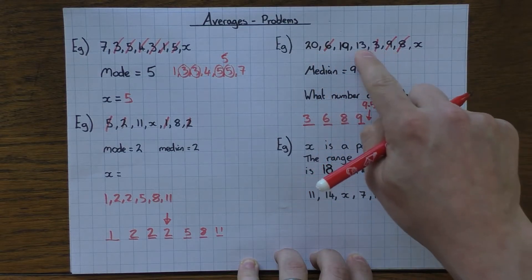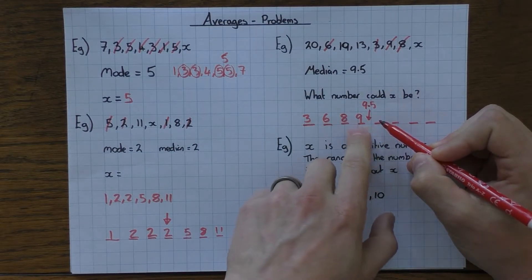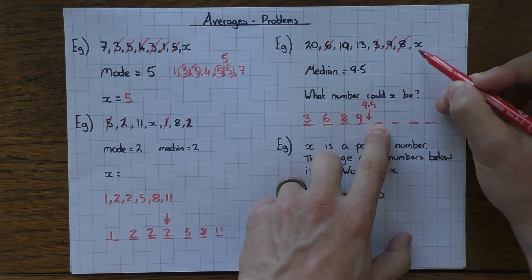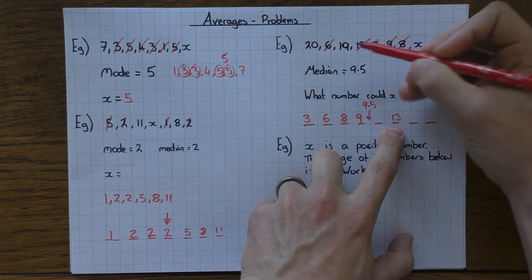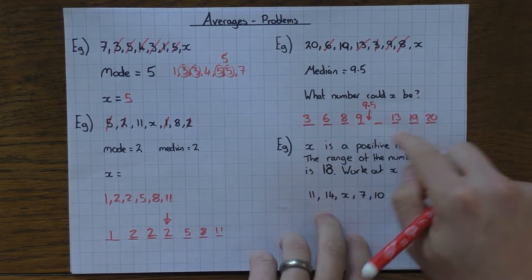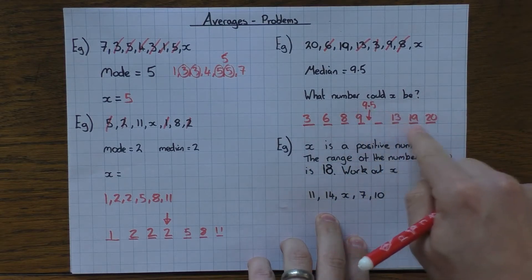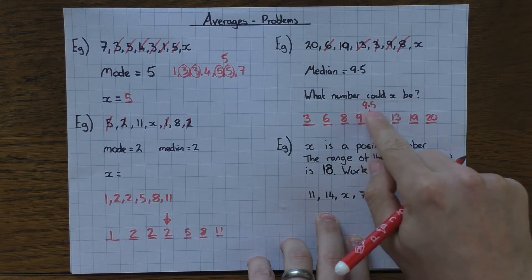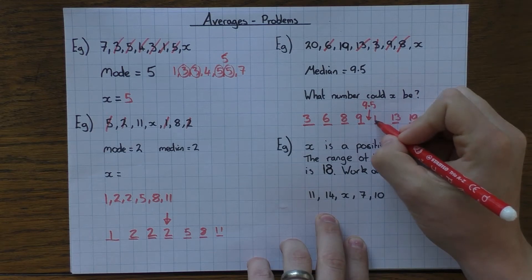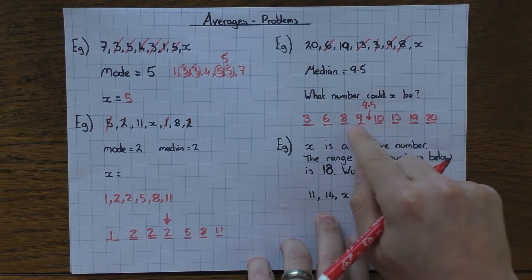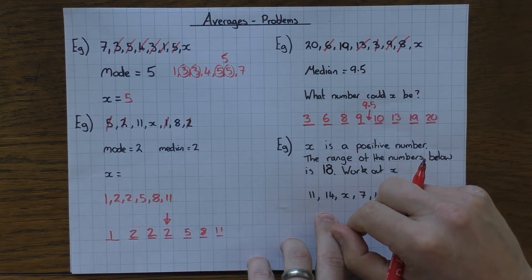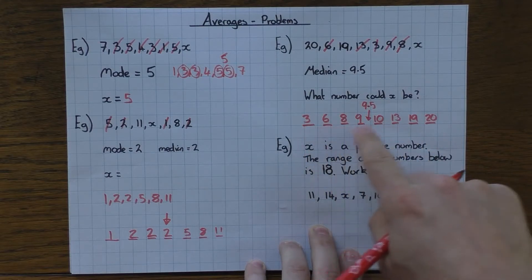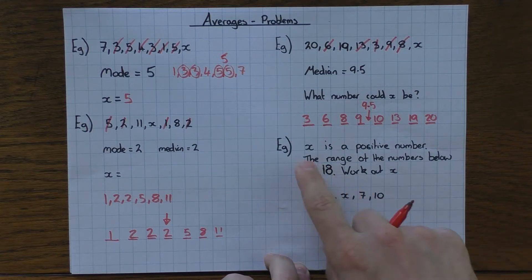The next number is 13, but I can't place that in position 5, because then the average of positions 4 and 5 won't be 9.5. So x must go in position 5, with 13, 19, and 20 filling the remaining slots. To find x: double 9.5 to get 19, subtract the 9 already in position 4, giving x = 10. So the two middle numbers are 9 and 10, and their average is 9.5. Highly recommend writing numbers out and filling them in to make this work.